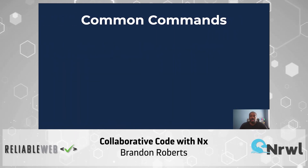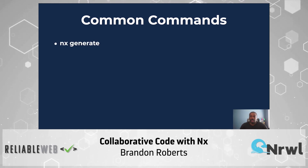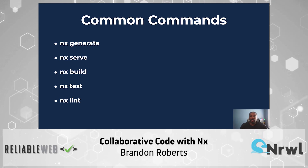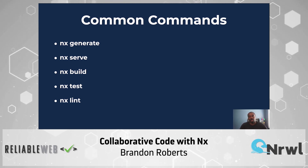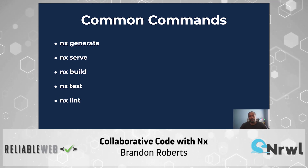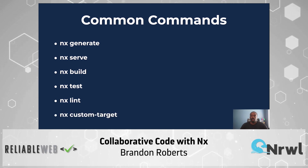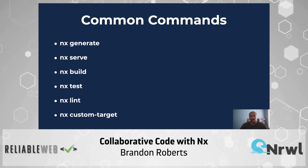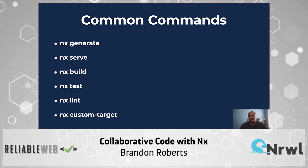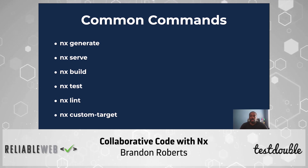NX comes with many commands, but here are a few of the main ones: NX generate, NX serve, NX build, NX test, and NX lint. These are just a few of the common ones. You want consistency for your developers with these common commands. But you can also define your own commands or targets in your configuration, such as a deploy command that you can have consistently for how you deploy each one of your applications or libraries in your monorepo.